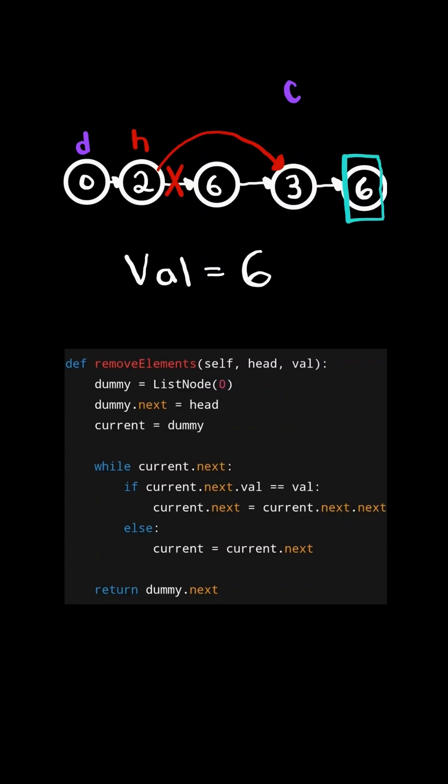Current.next does not equal null, and the node's value does equal the integer. So we skip this node by setting current.next equal to current.next.next. And we continue. Notice current.next is null, so we stop the loop. And all the nodes that have value equal to the integer have been skipped.